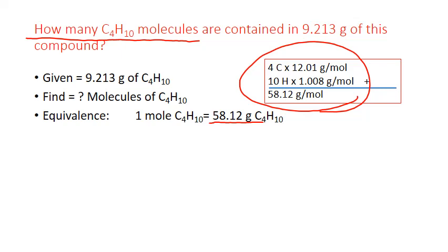We're also going to need the Avogadro's number equivalence. One mole equals 6.022 times 10 to the 23rd. And we use the unit molecules, of course, because we're dealing with a molecular compound, C4H10.